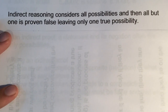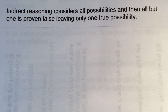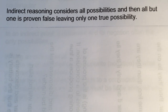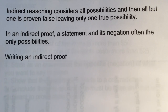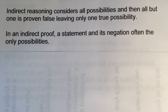Now shifting to indirect reasoning — this approach considers all possibilities and proves all but one false, so that one must be true. In a way it's saying everything else doesn't work, so it has to be this. In an indirect proof, a statement and its negation are often the only possibilities, and we narrow it down to show one doesn't work.